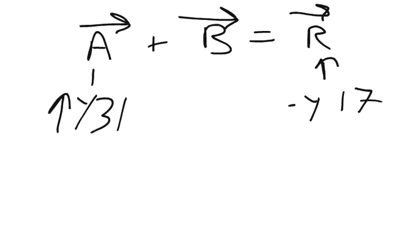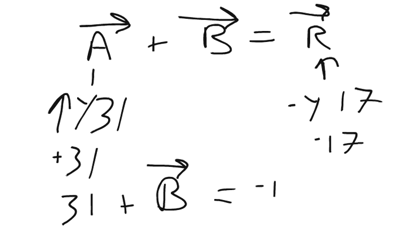So what we can do is we can call A positive 31, we can call the resultant vector negative 17, and we can use this to solve for vector B. We can say 31 plus some number B equals negative 17. And then it's just simple algebra to say that some number B equals negative 48.